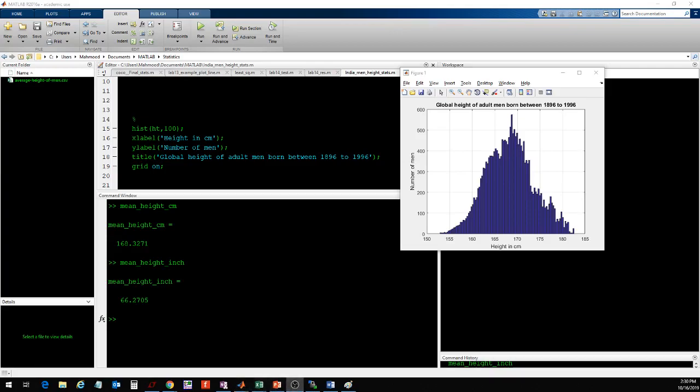I have clear all, CLC, close all. We talked about what that is. Then I'm using a CSV read command to read that CSV file. I'm not interested in the country, the code, or the year. I'm just interested in the height in centimeters. I'm going to read the CSV file from row 2, column 4 all the way down. I use 2 and 3 as my row offset and column offset, and then I read this file.